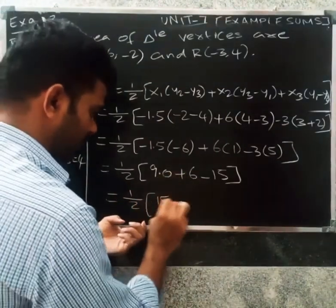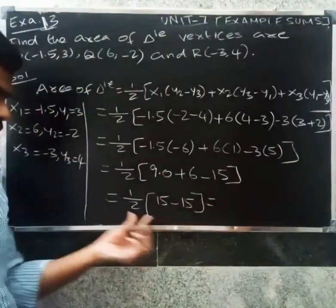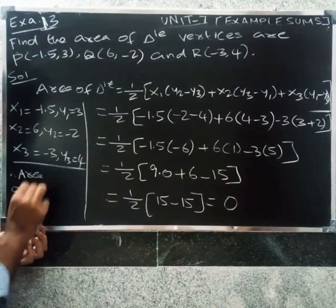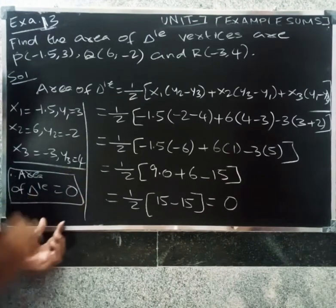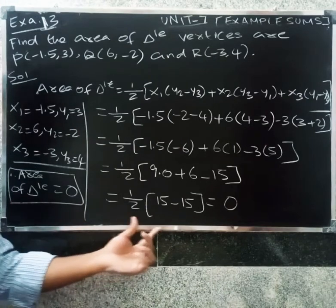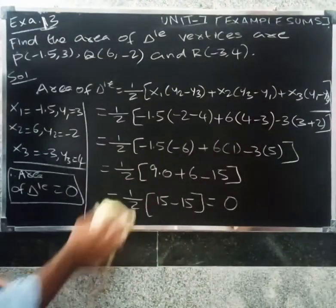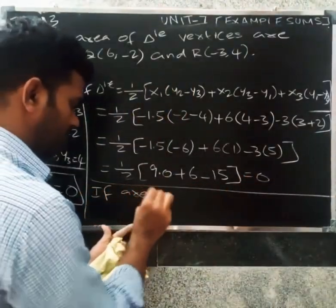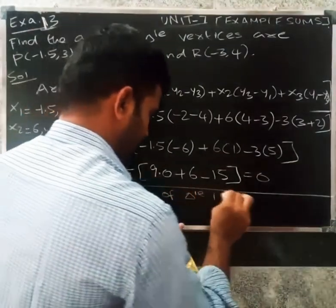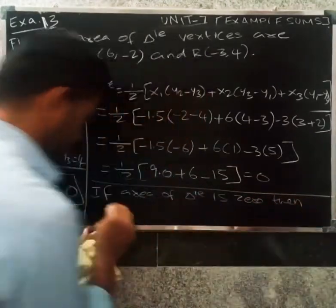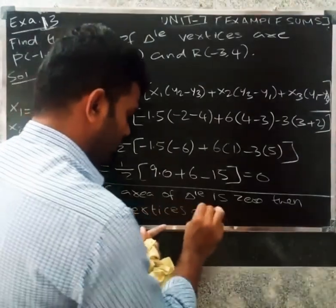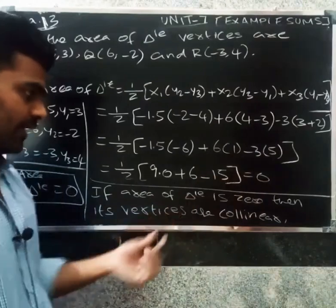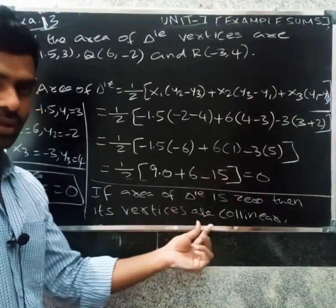9 plus 6 equals 15, and 15 minus 15 equals 0, divided by 2 equals 0. Therefore, area of triangle equals zero. If area of triangle is zero, then its vertices are collinear. So the answer is that the points are collinear.